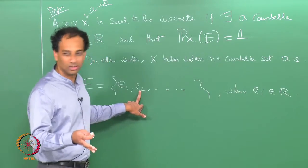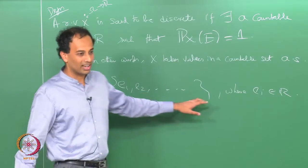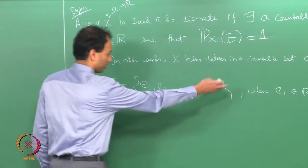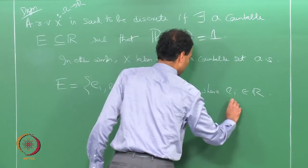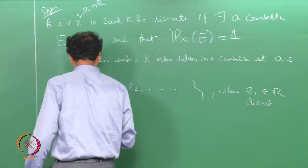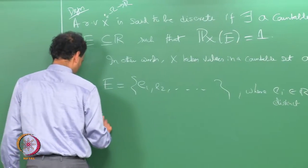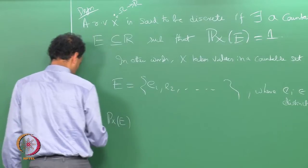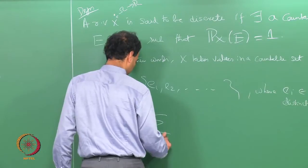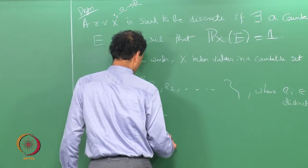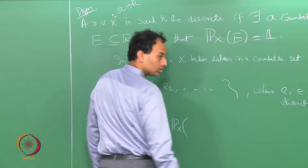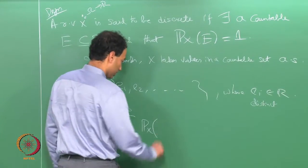Assuming the e_i's are distinct, we have P_x(E) = 1 which equals the sum over i of P_x({e_i}).